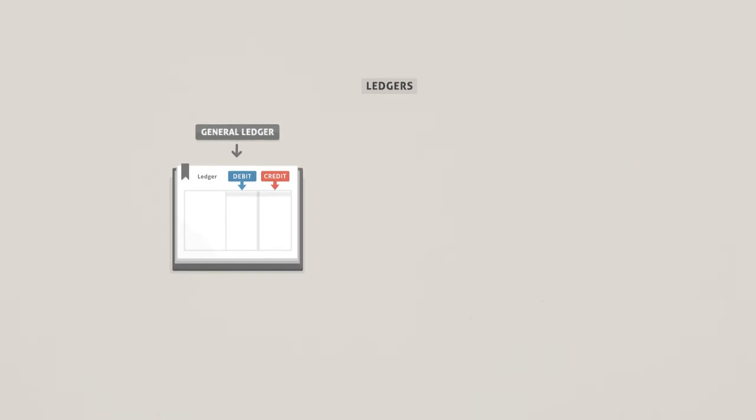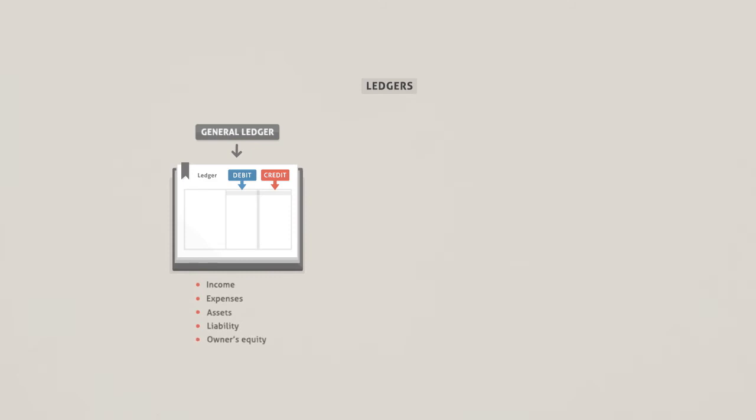There are three basic types. General ledger for recording income, expenses, assets, liabilities and owner's equity.